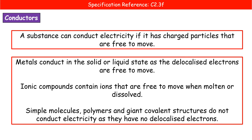Starting with metals: as we know from the diagrams of metallic bonding and metallic structures, we've got positive metal ions and delocalized electrons. This means that metals are able to conduct when they're in either the solid or the liquid state, because the delocalized electrons are free to move.